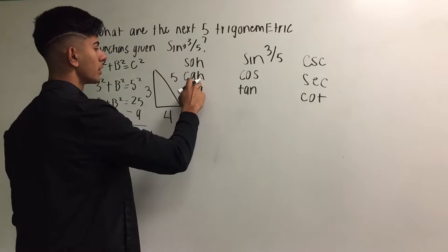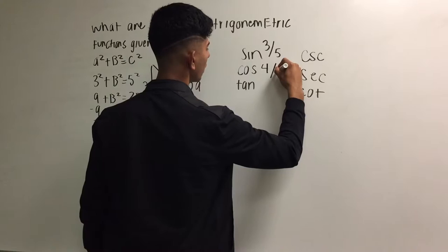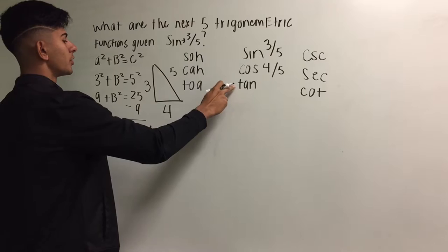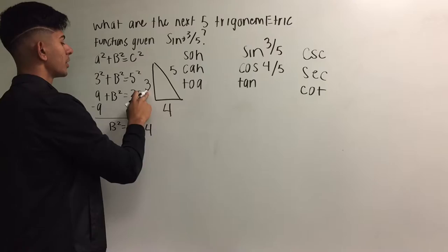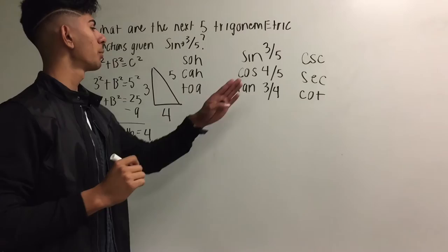Then we have tangent, so tangent would be opposite over adjacent, so opposite over adjacent, 3 over 4.